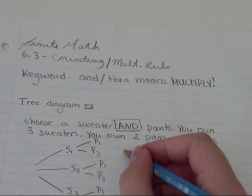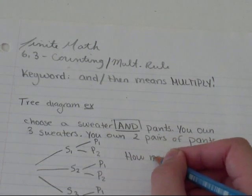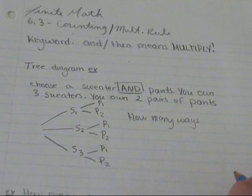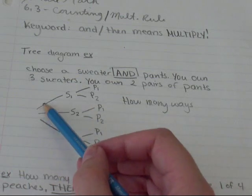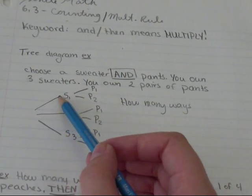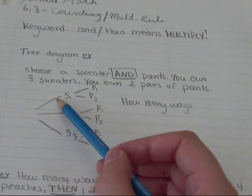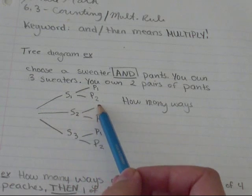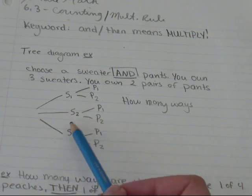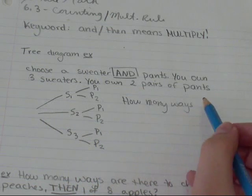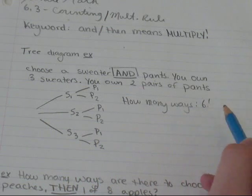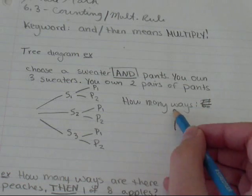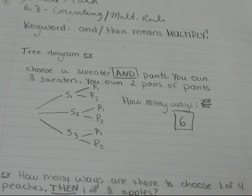So to find how many ways, you count how many ways are there to follow a path or a branch on my tree diagram. So I've got one way here, another way here. So that's two, three, four, five, six different paths. So how many ways are there? There's six ways. There's six ways to choose a sweater and pants.